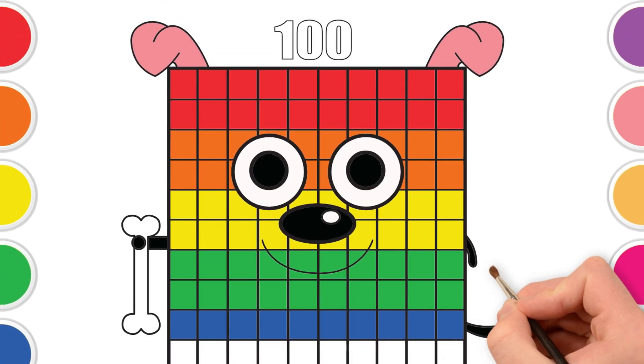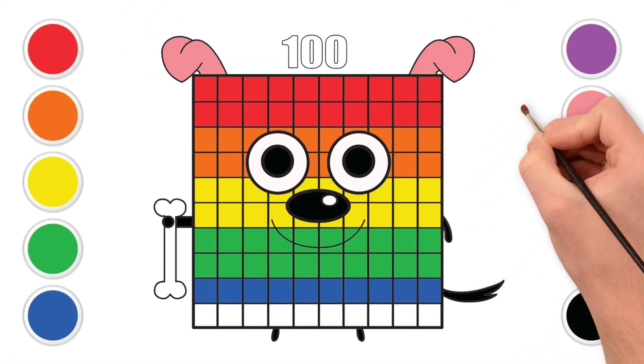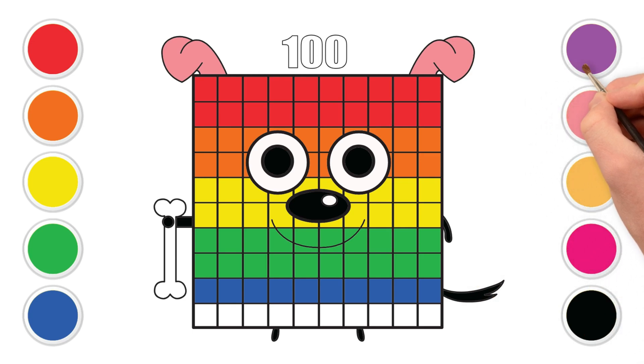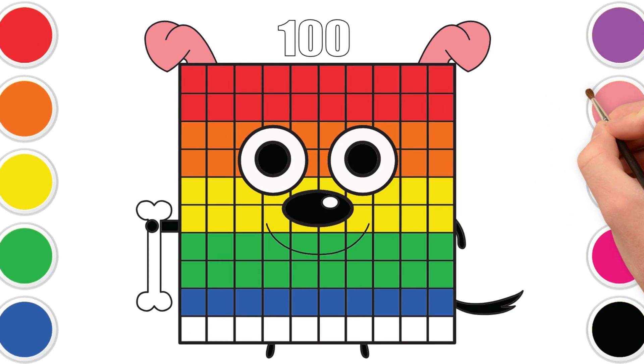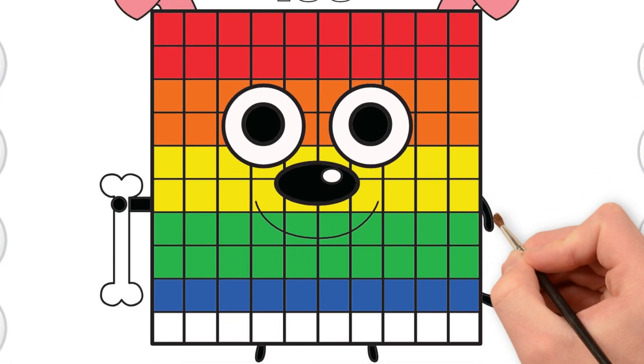Now we have 90. Wow. Just one more row left. Purple too. P, U, R, P, L, E.